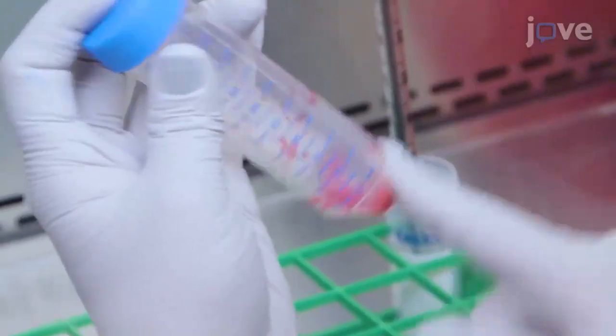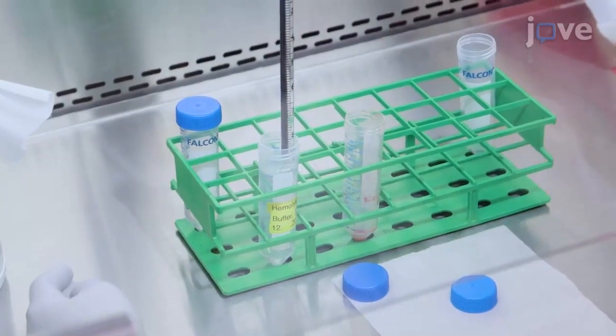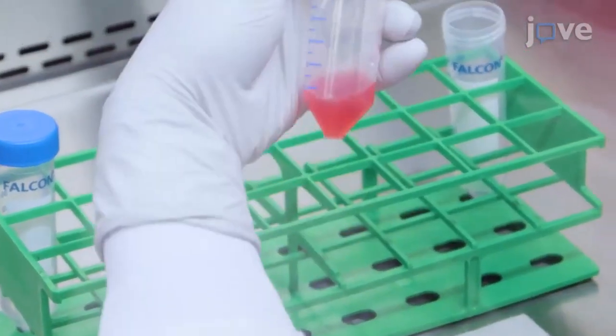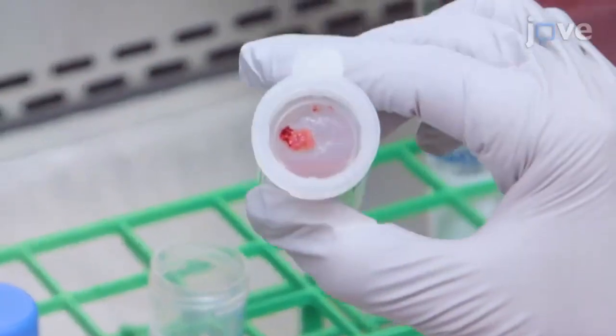Resuspend the pellet in the residual supernatant volume by flicking the tube and transfer the bone marrow suspensions into a new 50 milliliter tube using a 70 micrometer pore cell strainer to remove any blood clots.